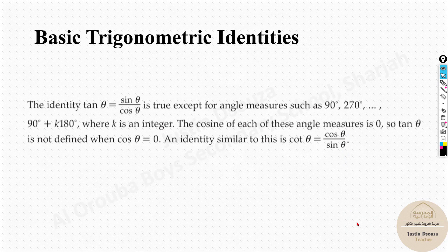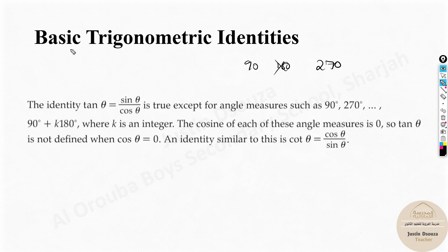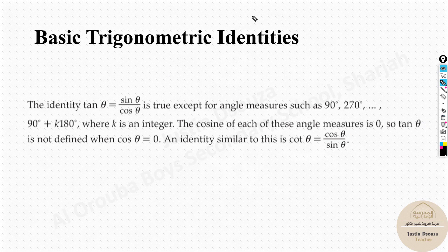One important reminder: the denominator can never equal zero. A correction from earlier — cos 180° is not zero; it is cos 90° and cos 270° that equal zero. So wherever the cosine graph crosses zero, those angle values must be avoided in expressions where cos is in the denominator.